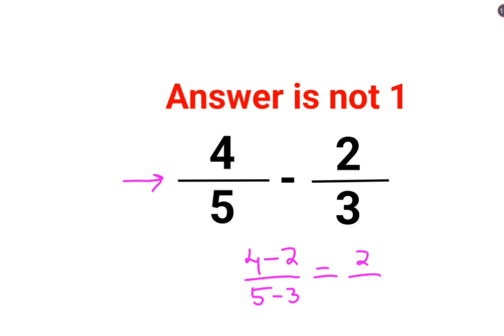Now this is incorrect. Please understand whenever you have subtraction, you need to realize that you need to make the denominator common. And how you can do that? We need to take LCM of the denominators which is 5 and 3.